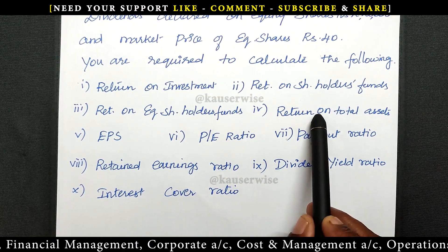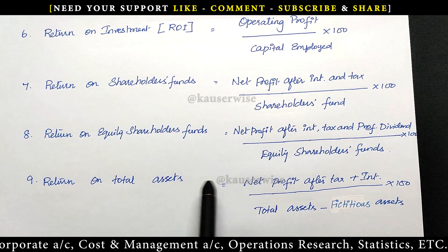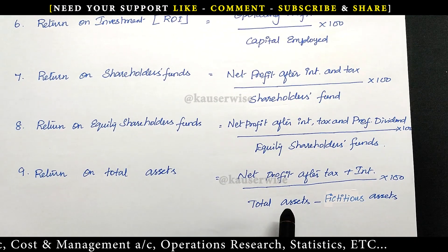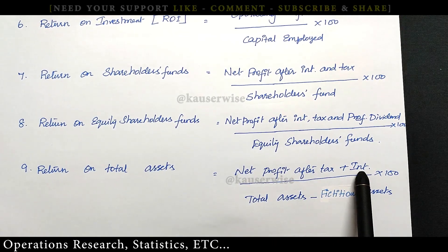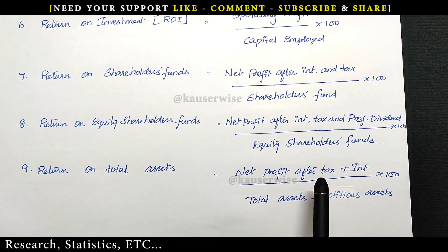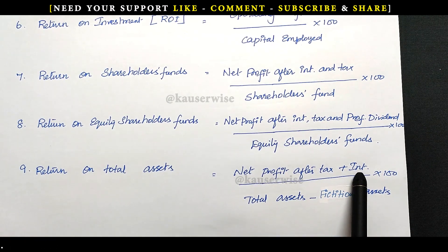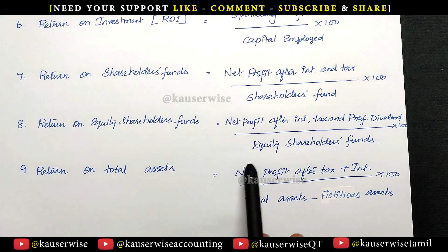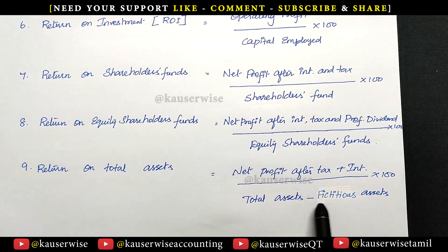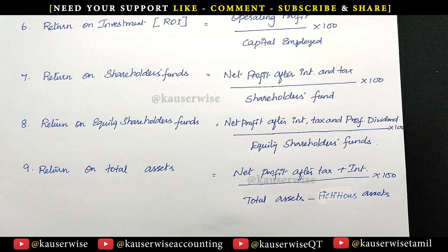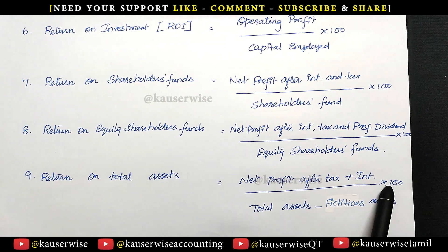The fourth one is return on total assets. Here we compare total profit with total assets. Total profit means net profit after tax but before interest. In the income statement you find net profit after interest and after tax — take that profit and add back the interest which was already subtracted. Then you get total profit, which we compare with total assets. Total assets minus fictitious assets, if any; if not, just leave it, then multiply by 100.